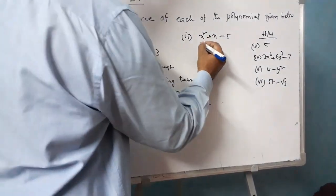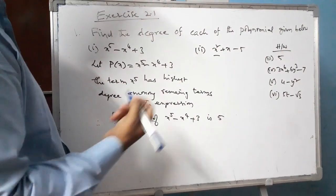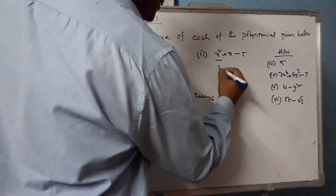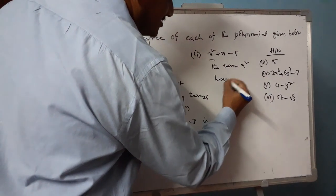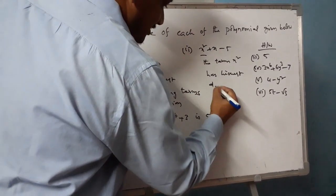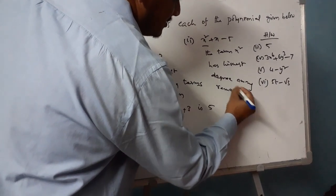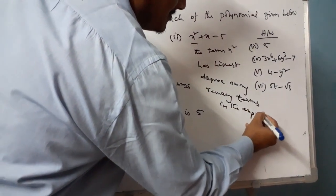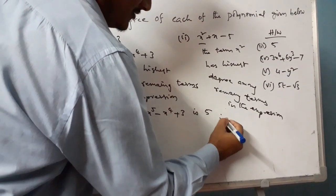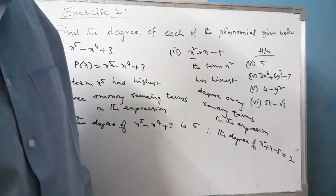For the next polynomial, x squared has the highest degree among the remaining terms. So 2 is the degree of the polynomial. The term x squared has the highest degree among all remaining terms in the expression. Therefore, the degree of x squared plus x minus 5 is 2.